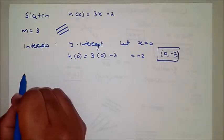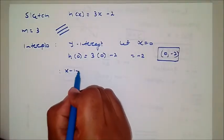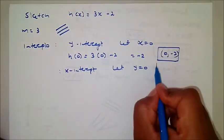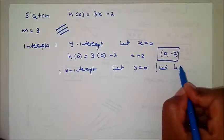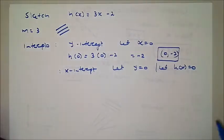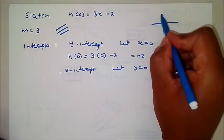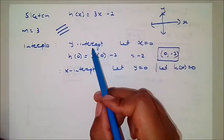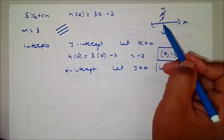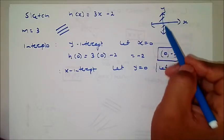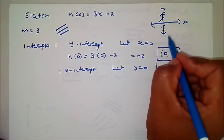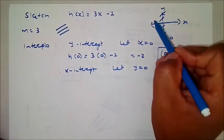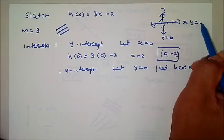For the x-intercept, you let y equal 0 — in our case, you let h(x) equal 0. The reason we do that: the y-intercept is the value of y where the function cuts the y-axis, so at the y-axis x equals 0. When looking for the x-intercept, we let y equal 0, because at the x-axis y equals 0.